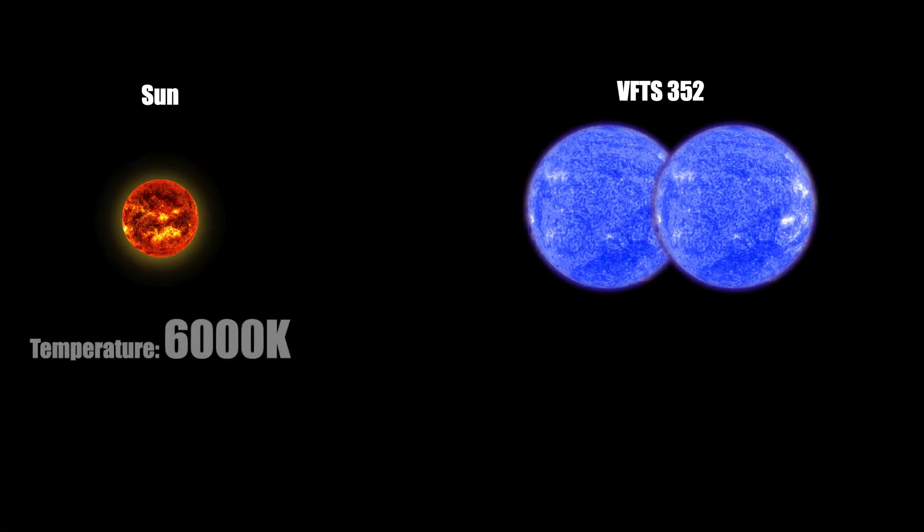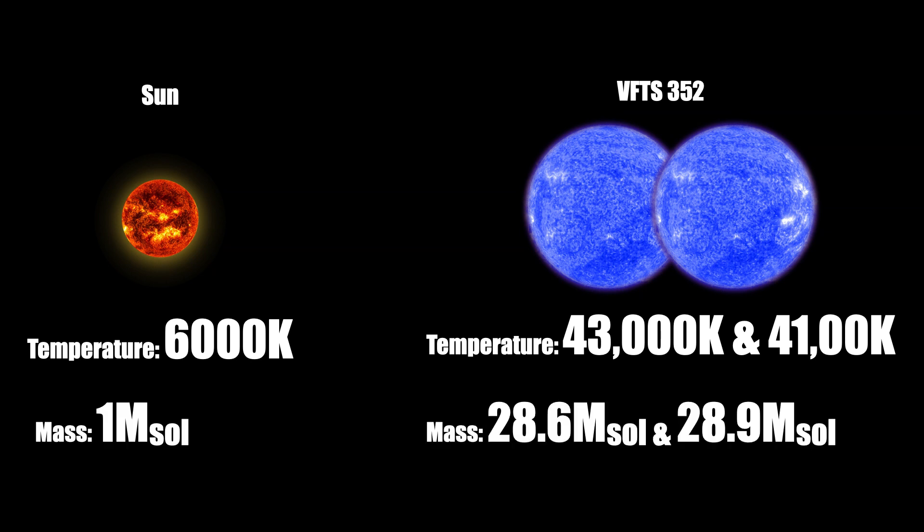The two stars have temperatures of over 400,000 degrees Celsius, and both are 28 times the mass of our sun. These stars are so close together that they're touching, but they're also orbiting around one another every 27 hours.